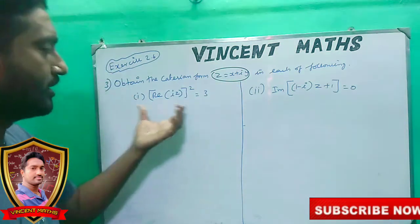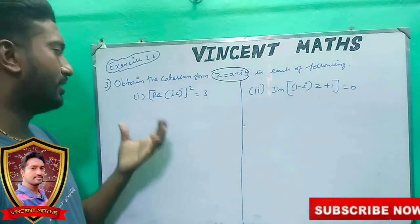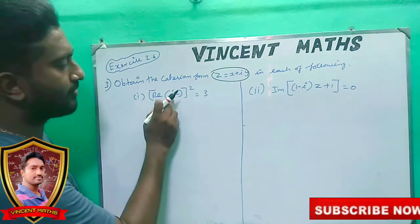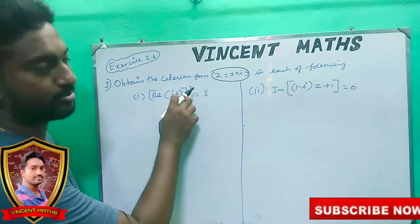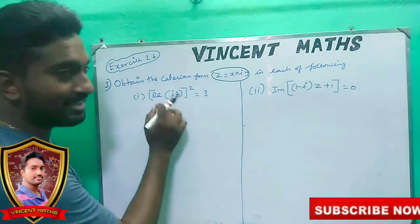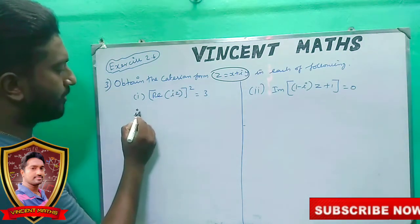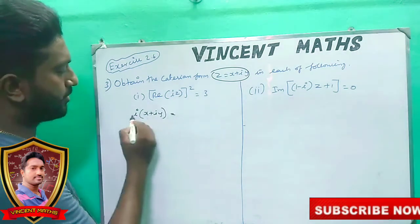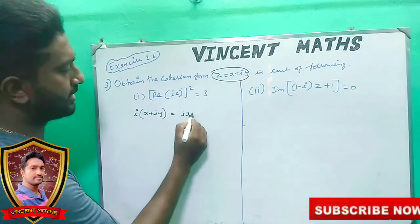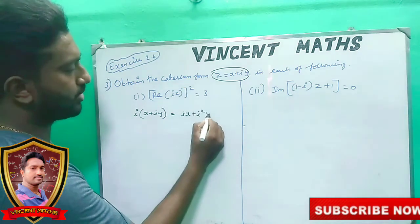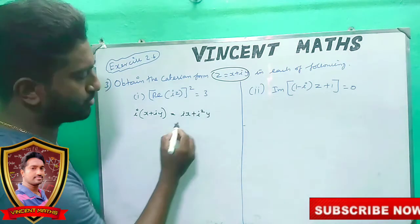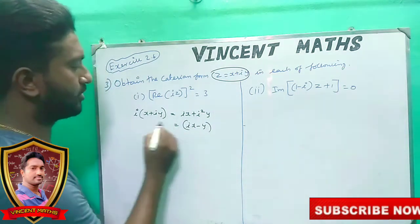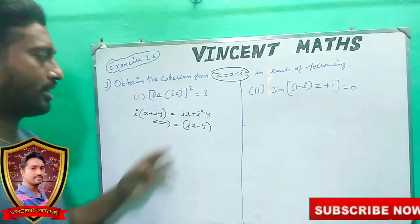If you want to find this value, we can find the first condition. The real part of i·Z is equal to 3. Let's check the value. So if Z equals x plus iy, now if I want to find i·Z, we need to find the value: i·x plus i²·y. If i² equals minus 1, then we get ix minus y.